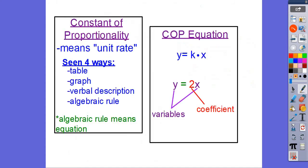Get two sticky notes and recap the lesson. The constant of proportionality means the same thing as unit rate. It's seen four different ways: table, graph, verbal description, and algebraic rule. An algebraic rule means an equation. The constant of proportionality equation is Y equals k times X. We've also refreshed our memory of variables and coefficients. Finish problems 6 and 7 for homework, and some students need to finish problem 3.